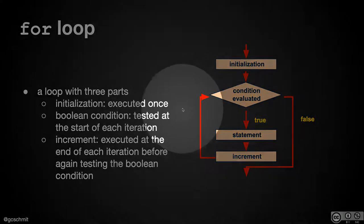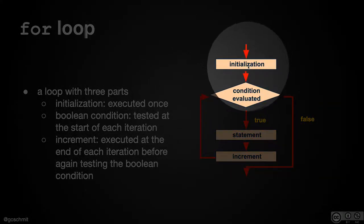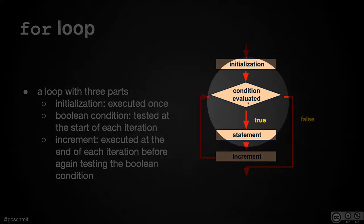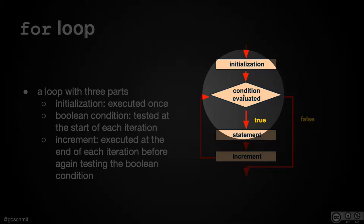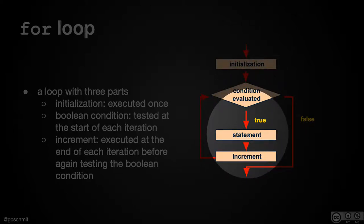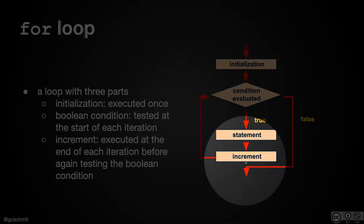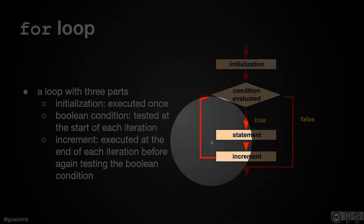Here are the different parts of a for loop. We start off with initialization, just like we had with the while loop, except it's part of the for statement. After we initialize our loop variable, we then evaluate the condition in exactly the same manner as we did with the while loop. If the Boolean expression evaluates to true, we run the body of the for loop. After the body runs, we then run the part of the for statement that updates the loop variable, and then we check the condition again.